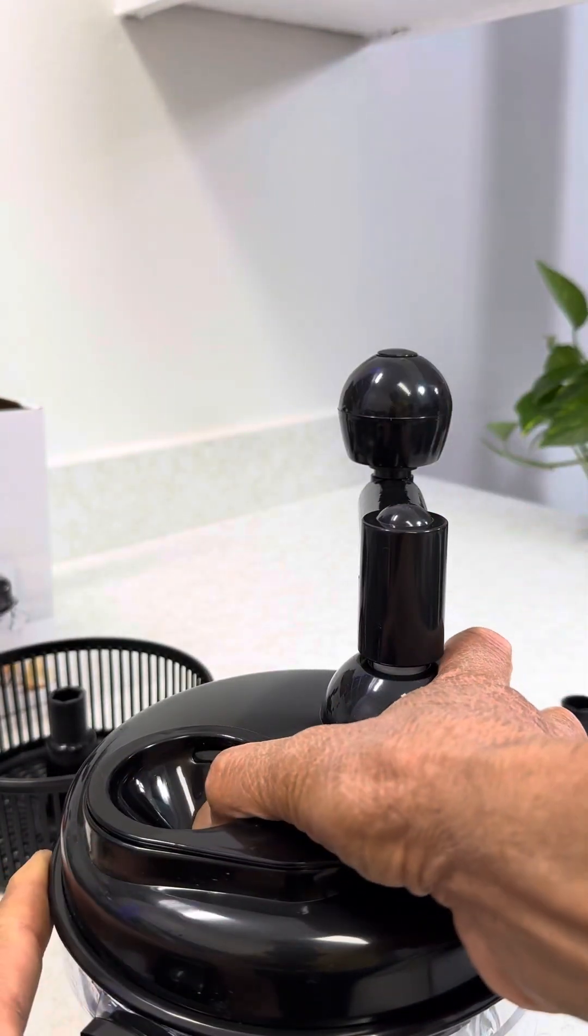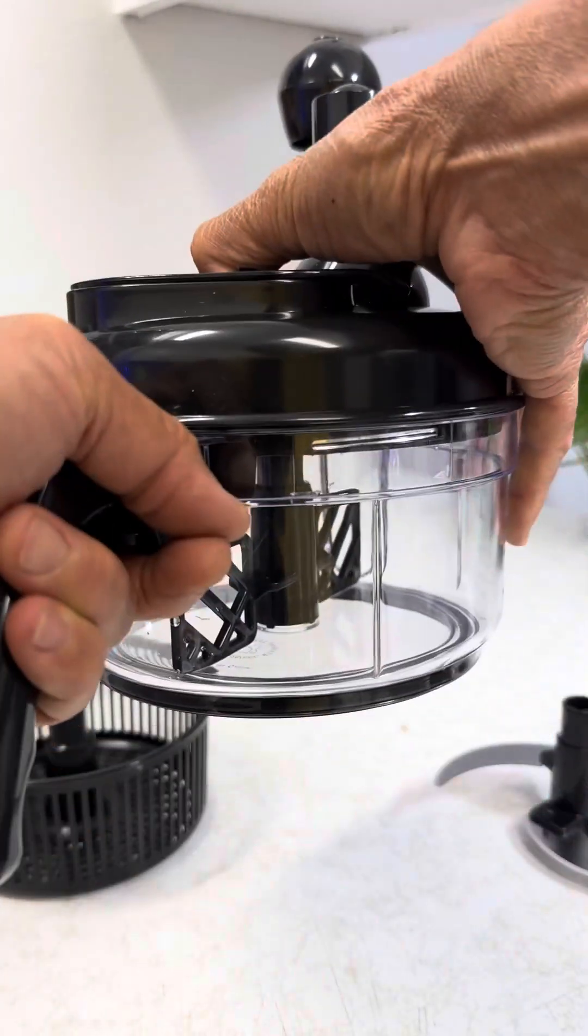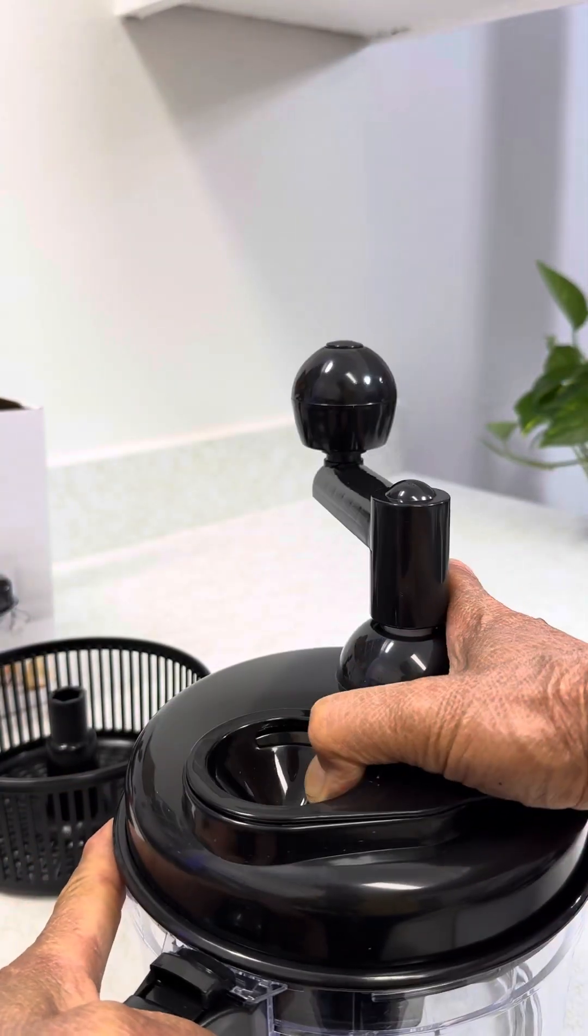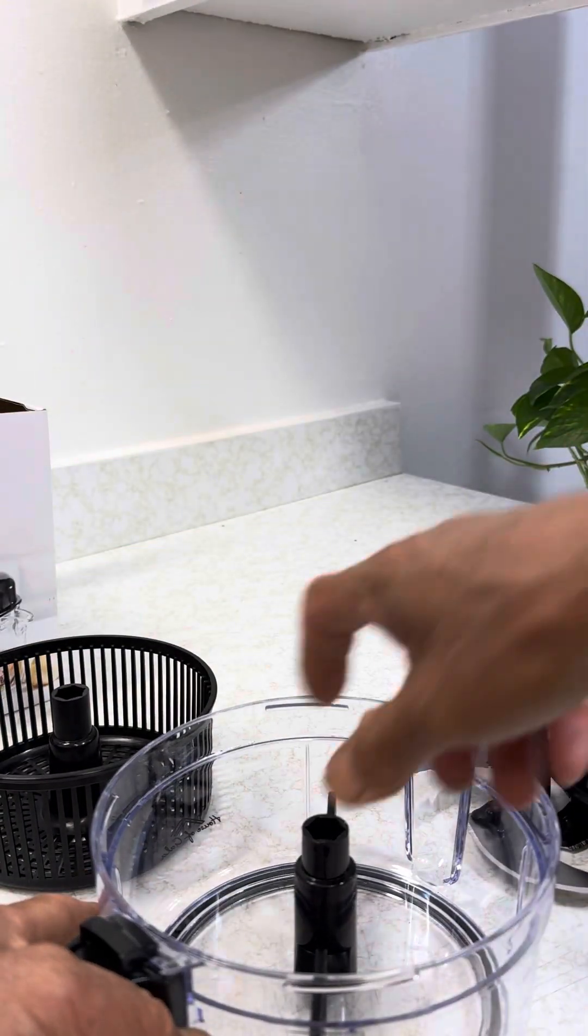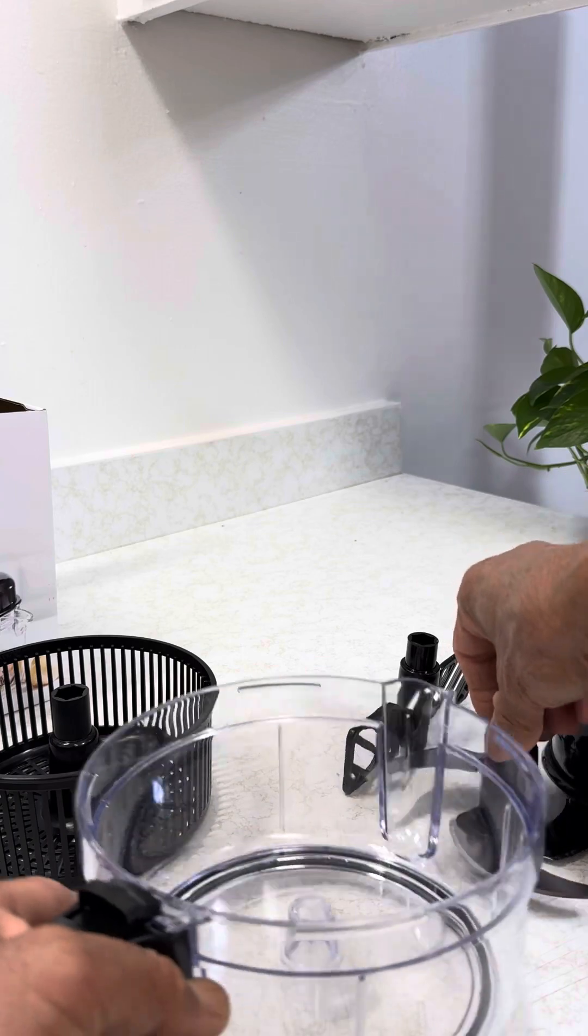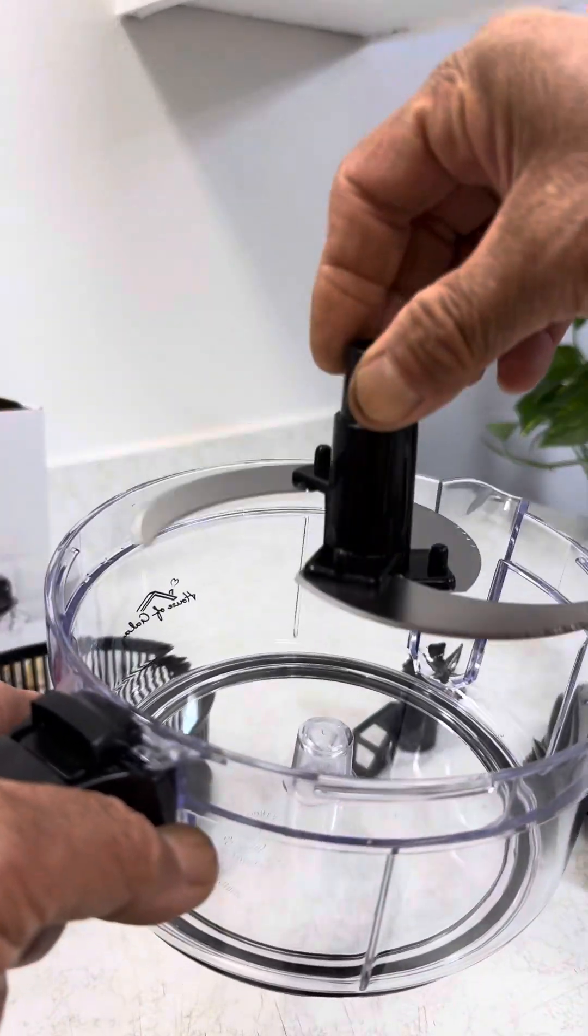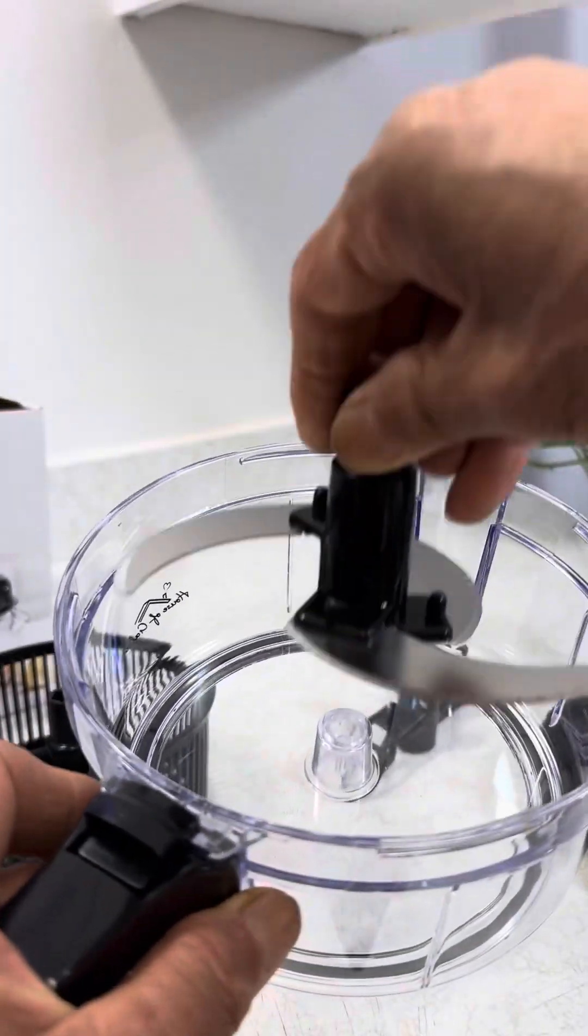And then when you take it out again, turn it counterclockwise, unlock it, and pull it out. Now you want to use this blade here to chop. This is a different attachment. Put it in the slot and line up this hole here in the slot.